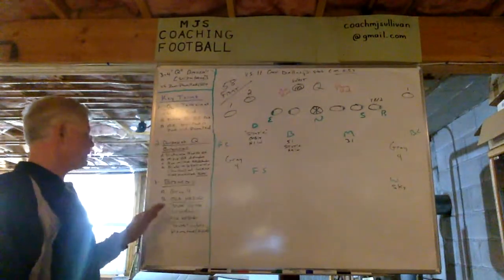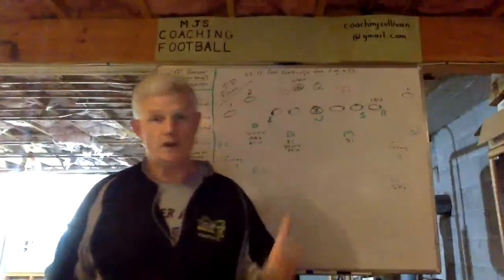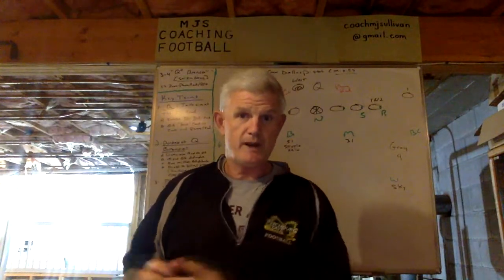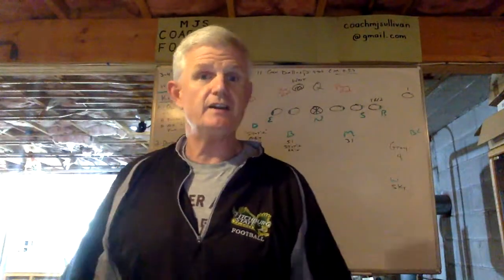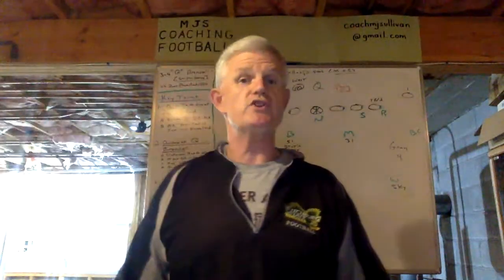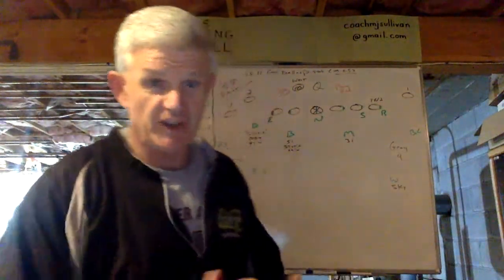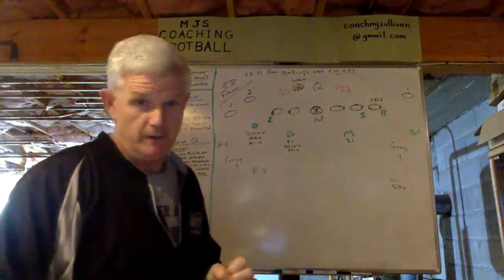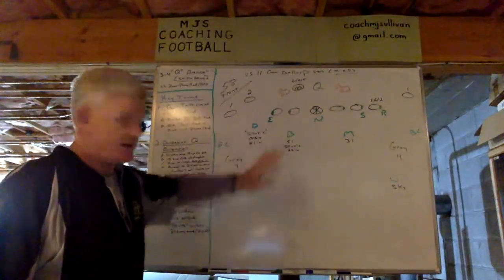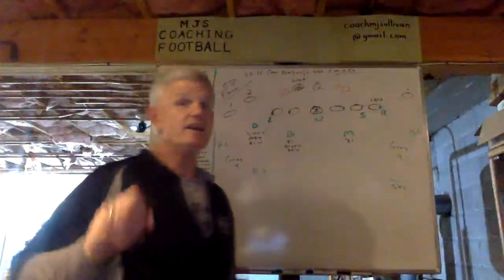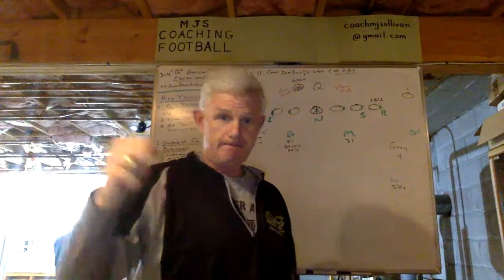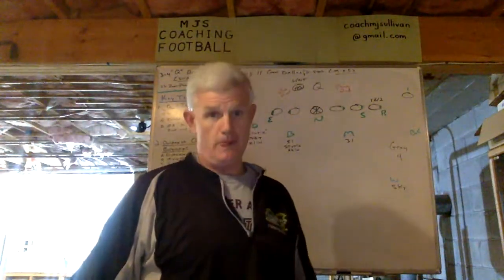The outside linebacker on the halfback side — in this case it's our dime — he stays static in the window, meaning he doesn't move. So the quarterback who's going to have a keep read, if he's now reading the outside linebacker for the pass, he's got a stationary linebacker who's not expanding like he normally does — there should be indecision there. He's in the window; that's the Bronco part of it. The inside linebacker on the halfback side is also static, unless it's a power read, which would mean the guard's pulling — then he goes with the pull.